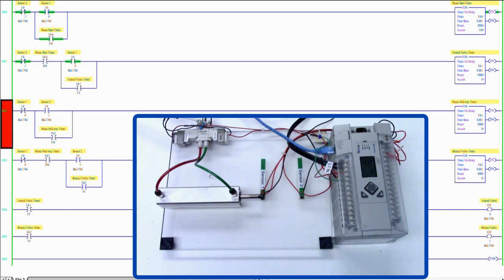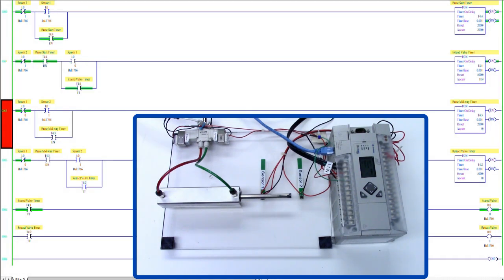When the rung 0 timer reaches 2 seconds, rung 1 is activated which sets a 5 second timer for the maximum extend time and rung 4 activates the valve extend coil.